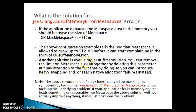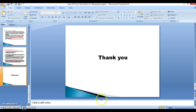Another solution is even simpler — you can remove the limit on MetaSpace size by deleting this parameter, but you will have to pay attention to the fact that doing so can introduce heavy swapping or reach native allocation failure. Note: the above recommendation quick fixes end up masking the symptoms by hiding the OutOfMemory MetaSpace and not tackling the underlying problem. If your application leaks memory or loads something unreasonable into MetaSpace, the above solutions will just postpone the problem.